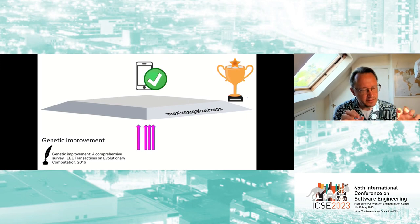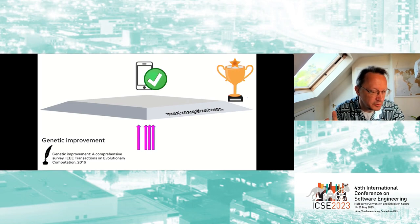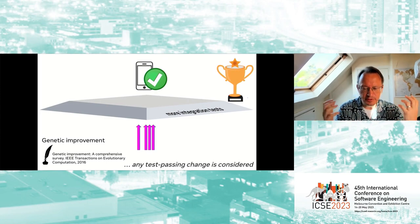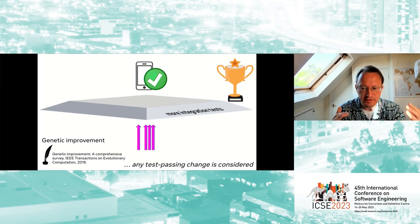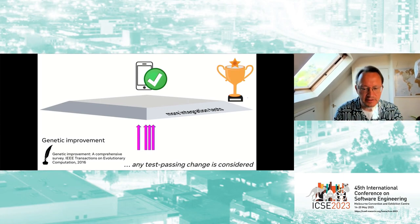The ability to generate high-coverage test data means we can talk about genetic improvement — where instead of correct-by-construction transformation, which was the way software transformation was done from the 70s through till about six or seven years ago, we now have a more cavalier approach: any test-passing change is at least worth considering because our testing is sufficiently strong. We treat code as genetic material to be manipulated, using testing as our fitness function.